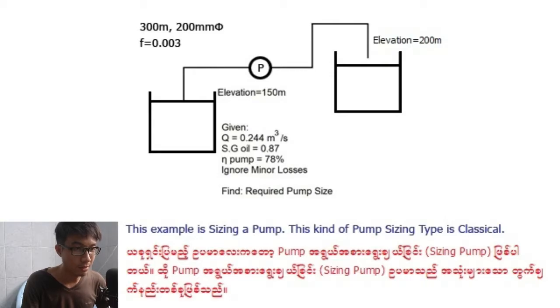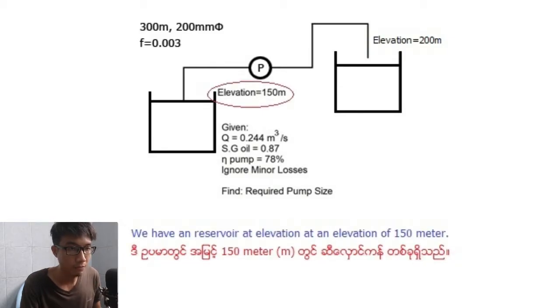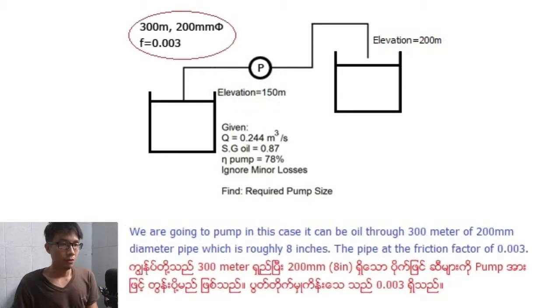This example is a pumping system. We have a reservoir at elevation of 150 meters. Water will be pumped through a 300 meter long, 200 millimeter diameter pipe, which is roughly 8 inches.